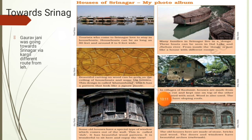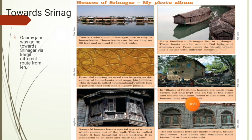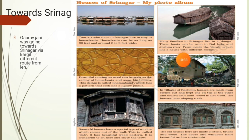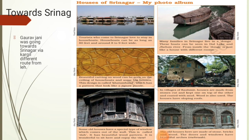In a village of Kashmir, houses are made from stones cut and stacked one on top of the other and coated with mud, because these are locally available materials. Wood is also used and the houses have sloping roofs. The houses have sloping roofs so that during heavy snowfall, all the snow slips down and there is no leakage. Some old houses have a special type of window which comes out of the wall, called Dab, with a beautiful wood pattern.